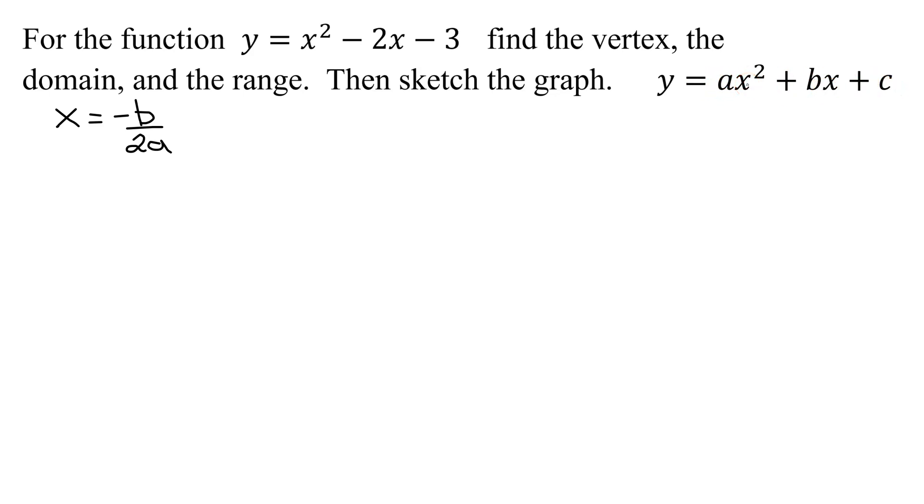So a is the coefficient of the x squared term. In our case, a is equal to what number are we too efficient to write in front of that x squared? A 1. And b is the coefficient of the x term, so it is negative 2. So the x value of the vertex equals negative b, which is negative 2, over 2 times a, where a is 1. The opposite of negative 2 is positive 2 over 2 times 1 is 2. So the x value of the vertex is 1.